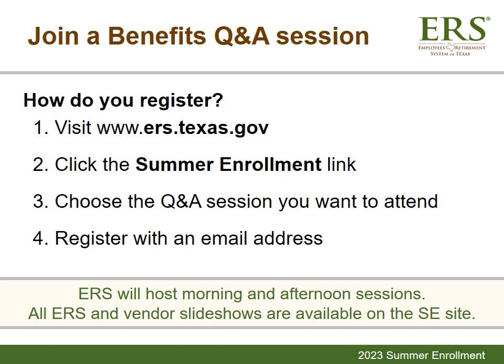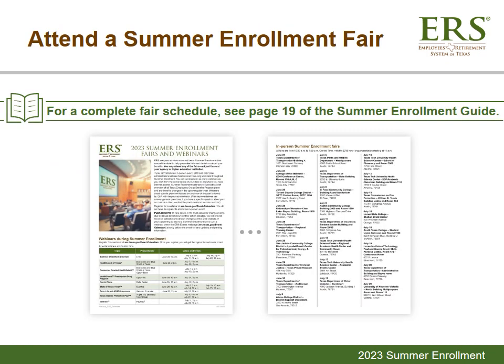To register, visit www.ers.texas.gov. There will be a summer enrollment link at the top of the site — click it to view the webinar calendar, which lists all Q&A sessions scheduled for each week of summer enrollment. Choose your session and register with an email address. ERS will host morning and afternoon sessions. All ERS and vendor slideshows are available on the summer enrollment site. Additionally, ERS benefits educators will be traveling across the state to agencies to provide in-person information. You can find a complete benefits fair schedule on page 19 of the summer enrollment guide.